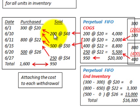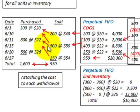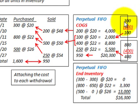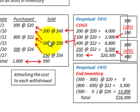For the first sale of 200 units, they come out of the oldest inventory of 300 at $20 each, giving $4,000. For the next sale of 500 units: 100 remain from the original 300 at $20 each, giving $2,000; the remaining 400 come from the next oldest batch of 800 units at $22 each, giving $8,800.